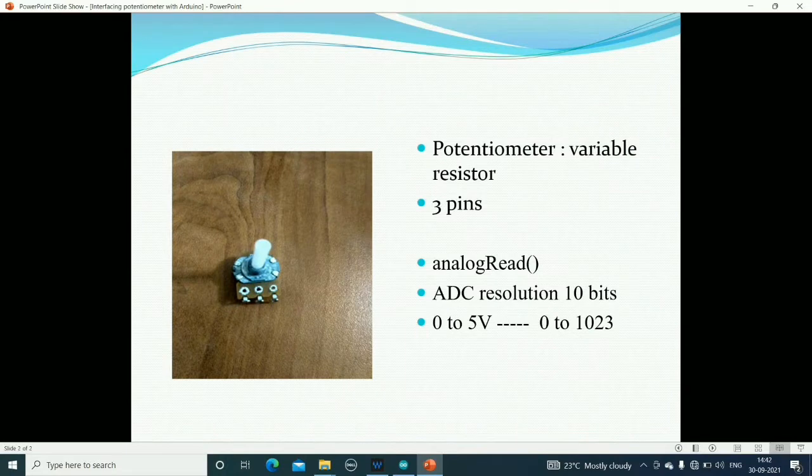The potentiometer is a variable resistor. As you can see in the picture, it has three pins. The one end of this potentiometer is connected to VCC, that is 5 volts. The third pin is connected to ground. These two fixed terminals are connected to VCC and ground, and the middle terminal is a variable terminal.